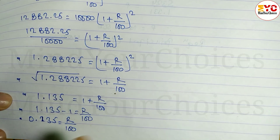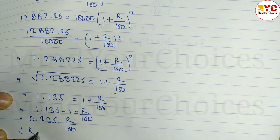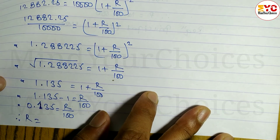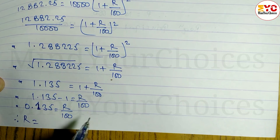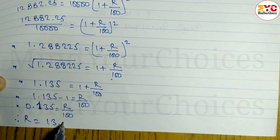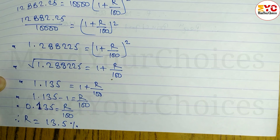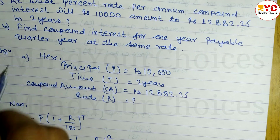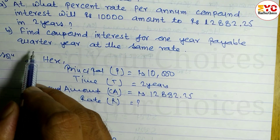Now multiplying both sides by 100: r is equal to 100 times 0.135, which gives 13.5 percent. So the rate of interest r is equal to 13.5 percent.